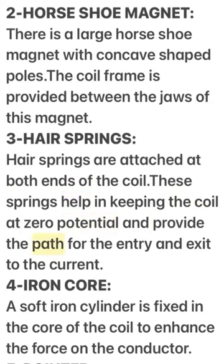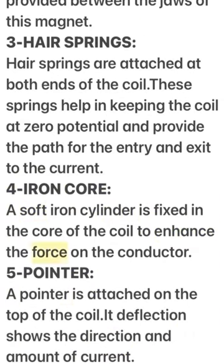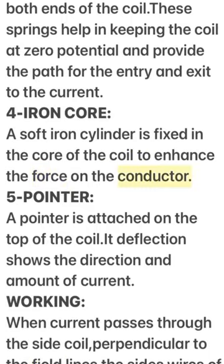These springs help in keeping the coil at zero potential and provide the path for the entry and exit of current. 4. Iron core: A soft iron cylinder is fixed in the core of the coil to enhance the force on the conductor.